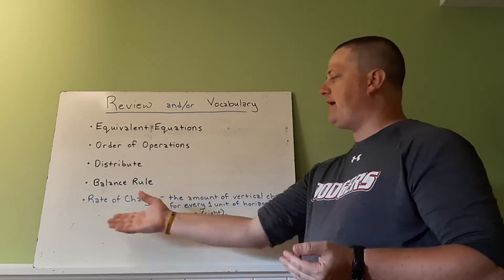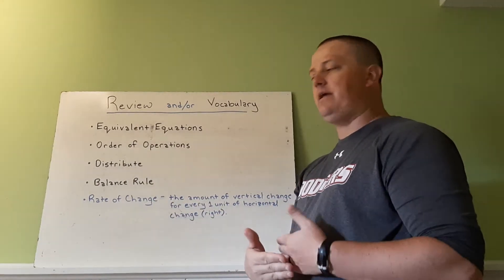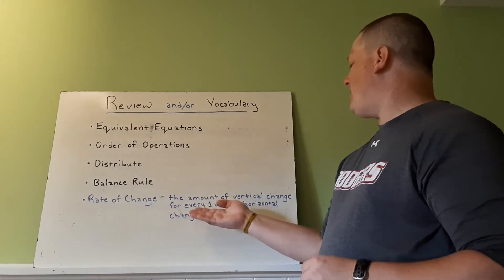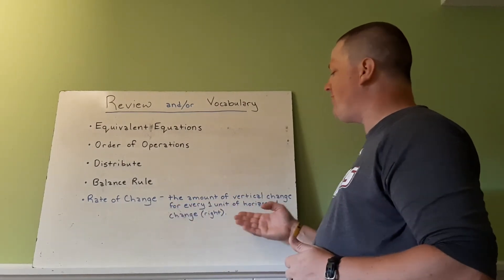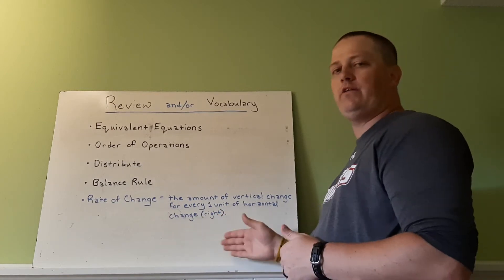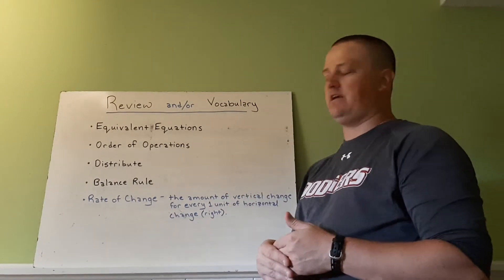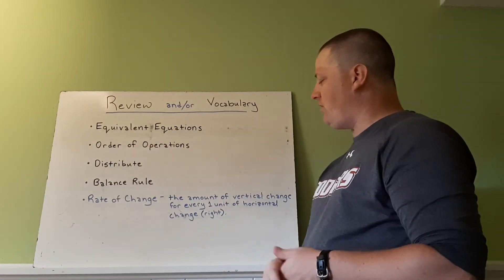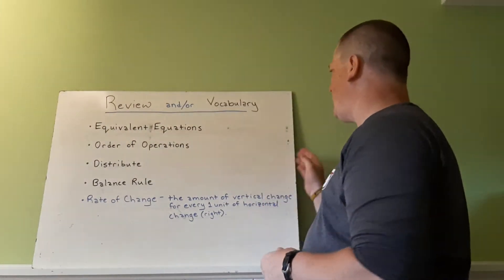Our new thing here is rate of change. This is something that you should have started learning about in middle school. The amount of vertical change, up and down change, for every one unit of horizontal change going to the right. So if I move to the right, does my line go up or down and how much does it go? And it's always focused on one unit of change when you're talking about what is that rate of change.